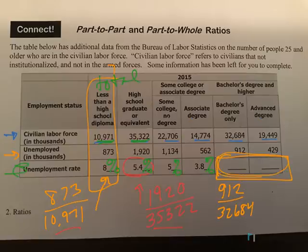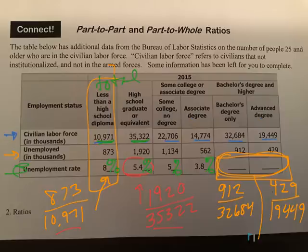We want to figure out these two. We're going to take 912 divided by 32,684, and 429 divided by 19,449, in order to find out those percentages, which gives us roughly 2.8% and 2.2%. So these are part-to-whole ratios in those spots.